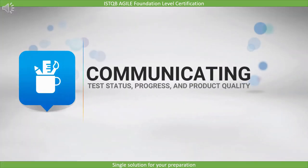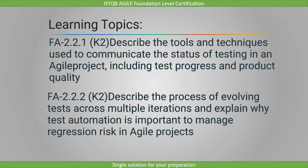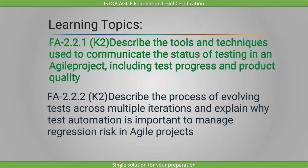In this lecture, we will be covering communicating test status, progress and product quality. The learning objective here is to describe the tools and techniques used to communicate the status of testing in an Agile project, including test progress and product quality. This is marked as K2.